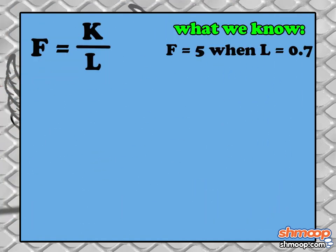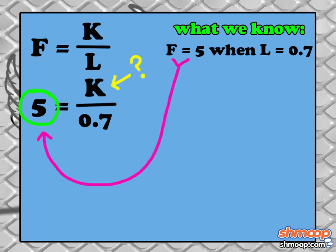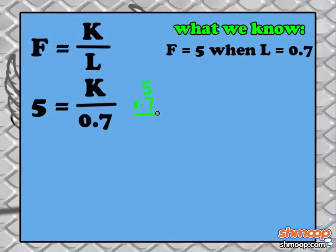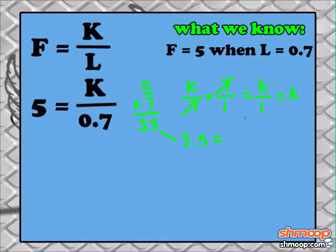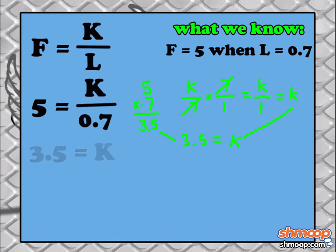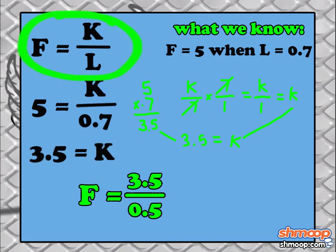To find k, we can plug in what we know. Frequency is equal to 5 in this instance, and our length is 0.7. By multiplying both sides by 0.7, we see that k equals 3.5.